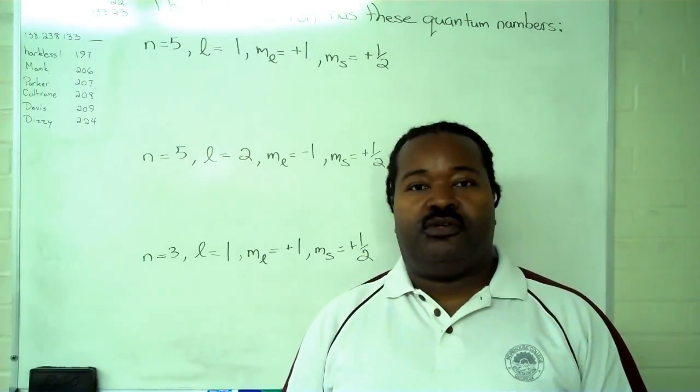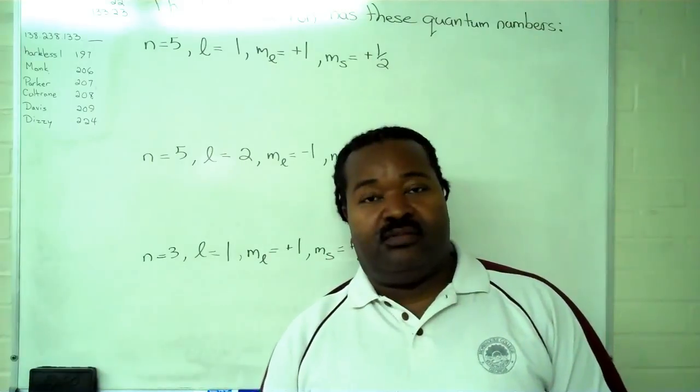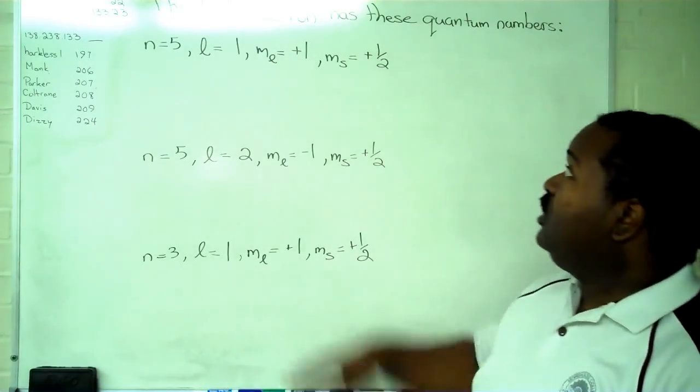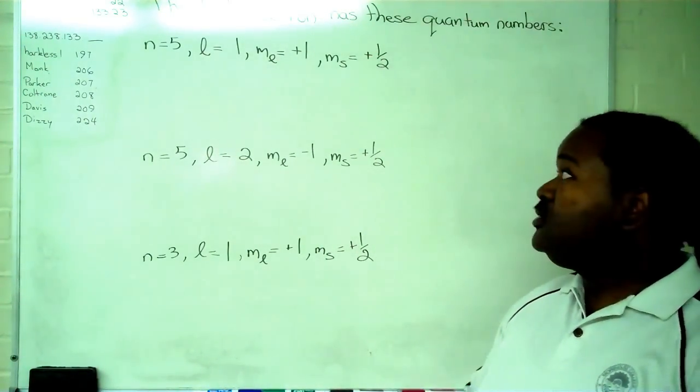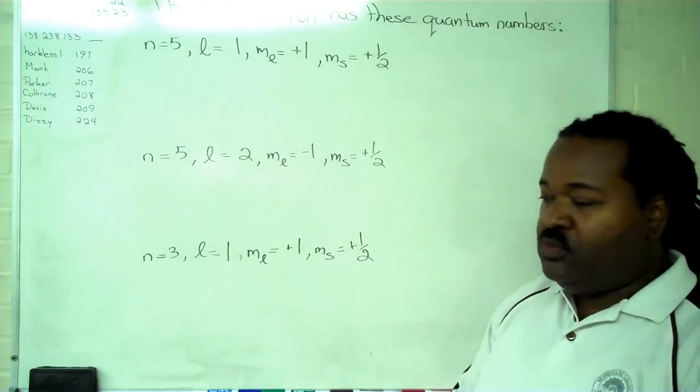This instructional video is designed to show you how to find the identity of an element when given the quantum numbers of the last electron. Here we have three examples, so we'll step through each of these in order.